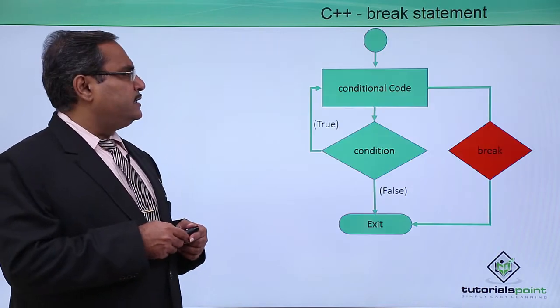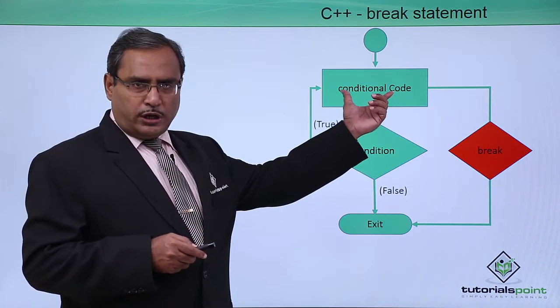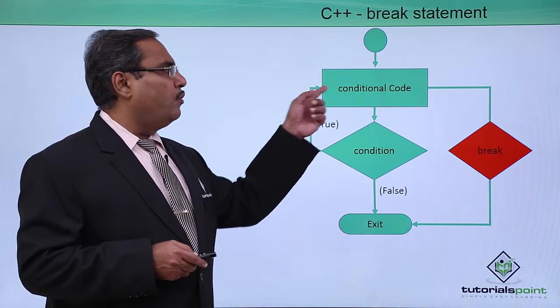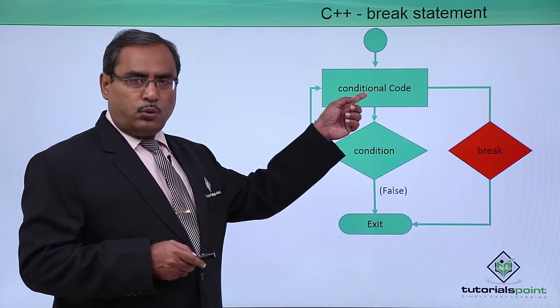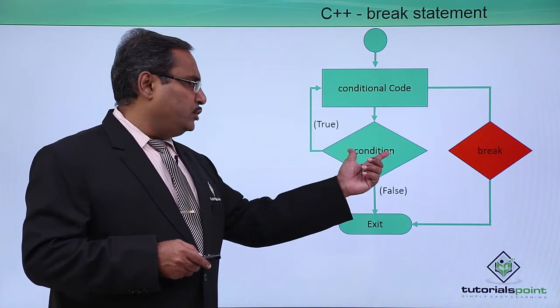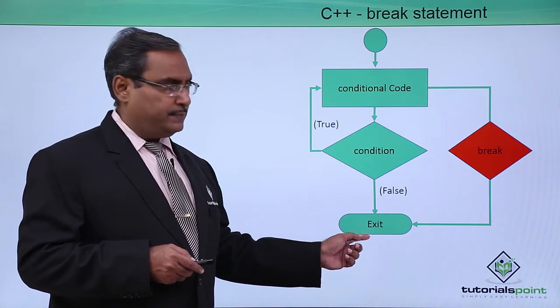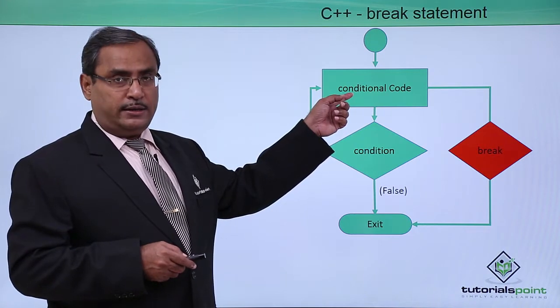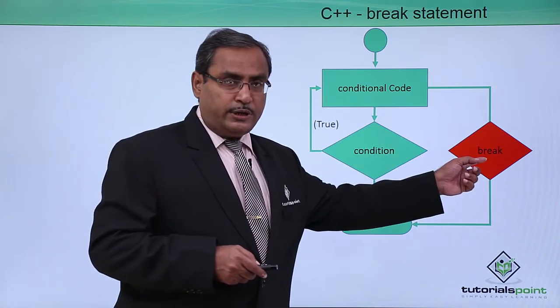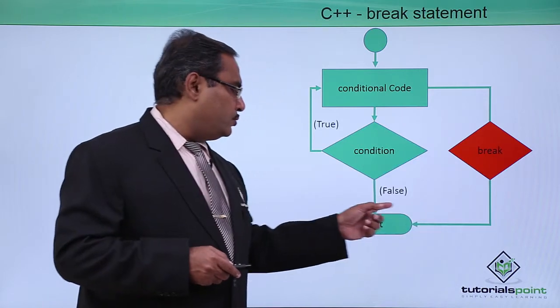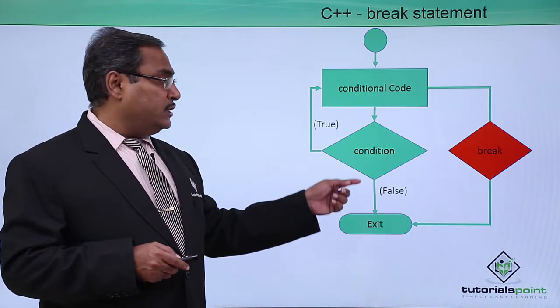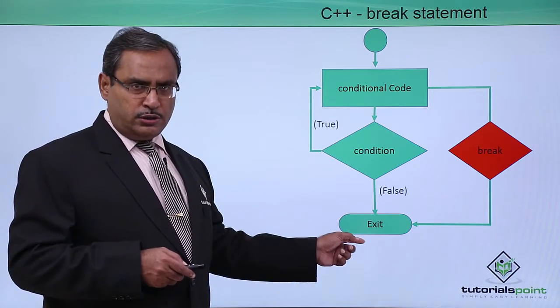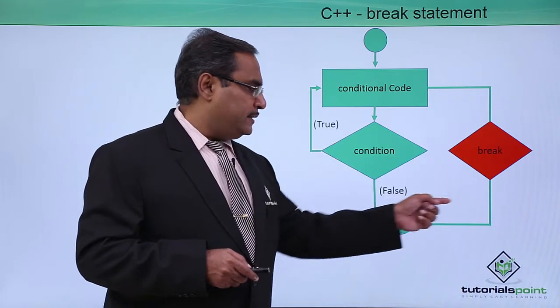Let us discuss it with one flowchart here. There is a conditional code to be executed and that is the condition. If the condition is true, then it will go for the execution of the conditional code again. If the condition is false, then it will come out and exit. But within this conditional code, if I required to take a break, the break will be executed and immediately the control will come out and it will go for the next part. In this way we can come out from this loop either using condition false or using the break statement as well.